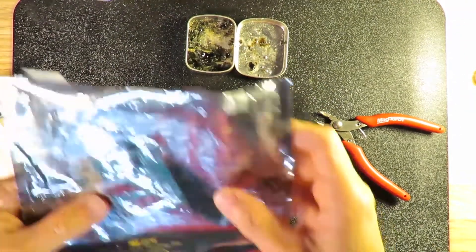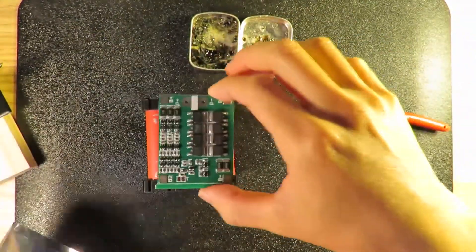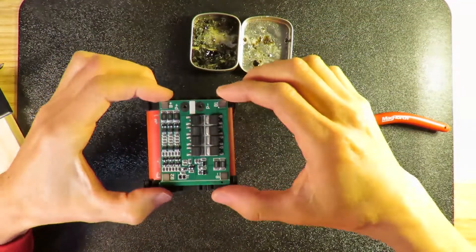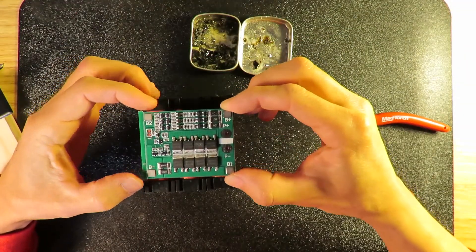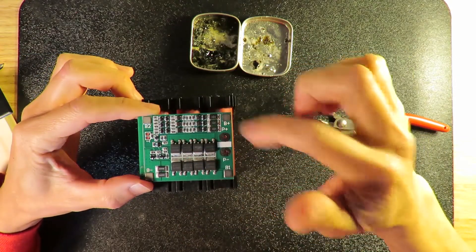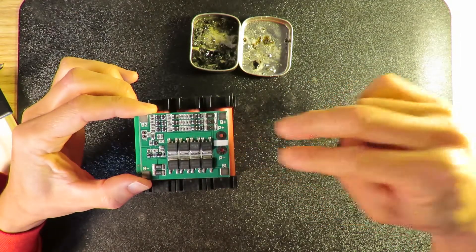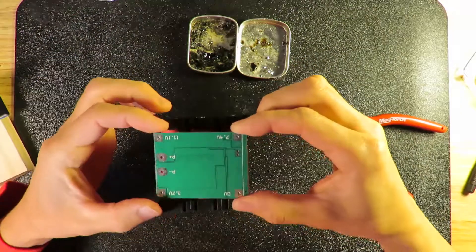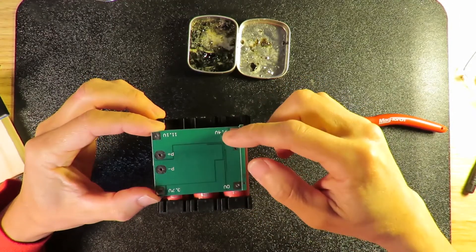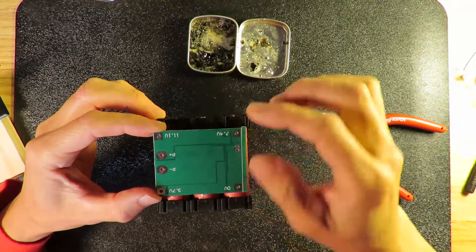The BMS board is basically a balanced charger and also a discharger. As you can see the board here, this is the negative and it says B1, B2, B plus. This pair of power is your charging and discharging wire. As you can see on the reverse side, it marks clearly: this is 0, 7.4, 3.7, and this is 11.